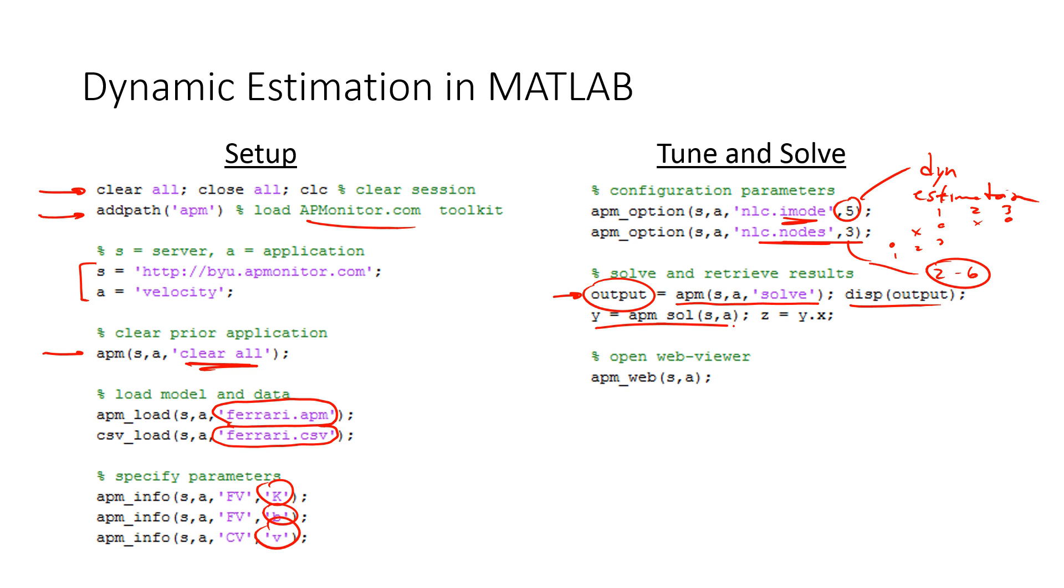And then I want to retrieve the solution. So that's going to be with the apm underscore sol. And then I'm just going to transfer the results to the variable z and open up a web viewer. So that's dynamic estimation.